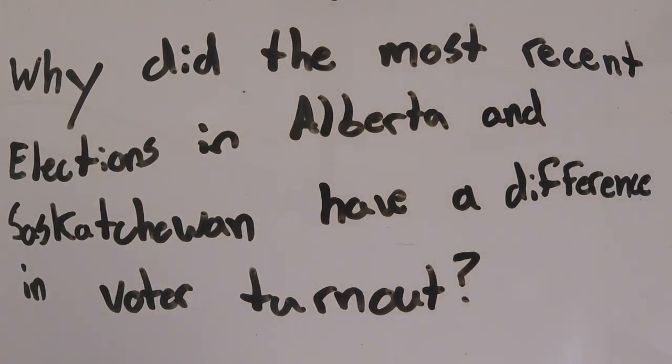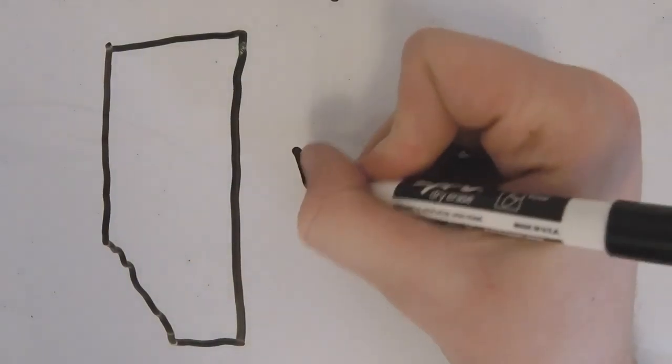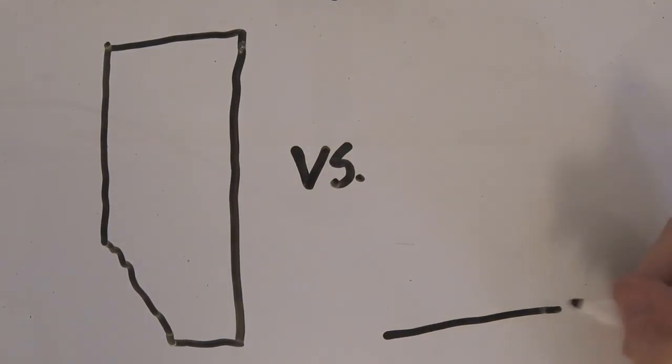For my research, I decided to look into voter turnout in Alberta and Saskatchewan. Alberta has the lowest on average voter turnout in provincial elections in Canada, and Saskatchewan has the second highest average voter turnout in provincial elections in Canada.